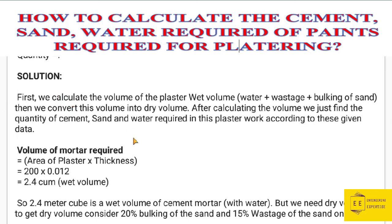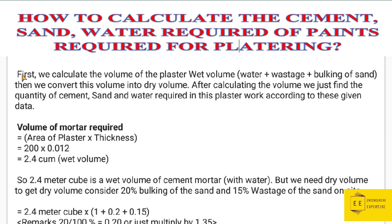Now let's go to the solution. First we calculate the wet volume of plaster. Then we account for wastage and bulking of sand, and convert the wet volume to dry volume. After calculating the dry volume, we find the quantity of cement, sand, and water required. Bulking of sand is the term for the increase in volume of sand when going from wet volume to dry volume.